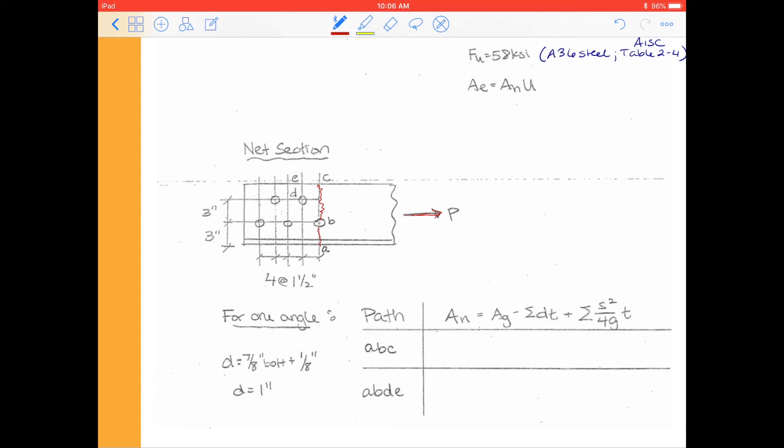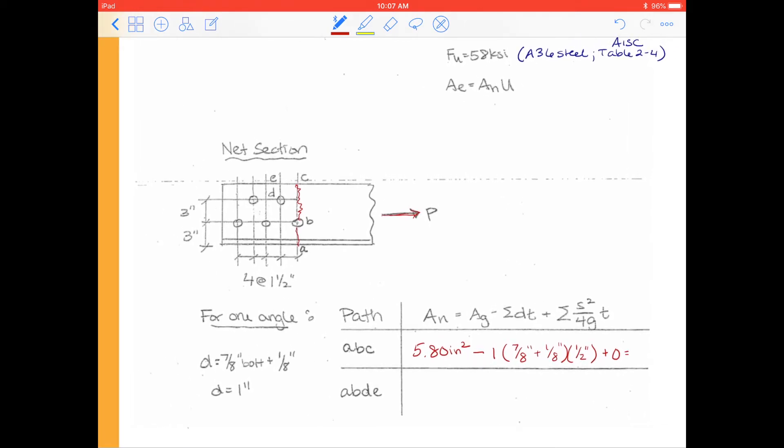An is going to be now 5.80 inches squared, our gross area minus. Now we go through one bolt across the diameter, so 1 times our bolt diameter, or our effective bolt diameter. Here we're given that we have 7/8 inch diameter bolts. And then we add in our 1/8 of an inch for the oversize of the hole and the damage that can occur. And then we want to multiply by the thickness. Now we're given that it's an L 8 by 4 by 1/2. So that means the leg thickness is a 1/2 inch. Path ABC goes across no diagonals, so we do not get any help there. And so we total the capacity there, and I have 5.30 inches squared.